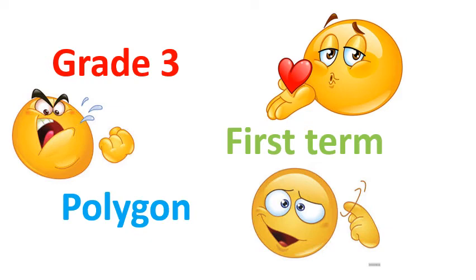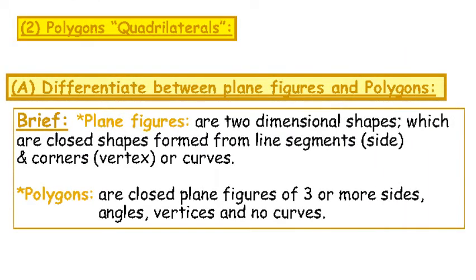Lesson on polygons. The difference between standard figures and polygons: standard figures are two-dimensional shapes which are closed shapes formed from line segments — that means sides — and cornered vertices, or curves. But polygons are closed plane figures of three or more sides, with angles only and no curves.